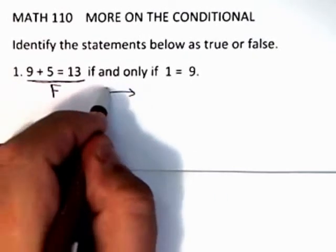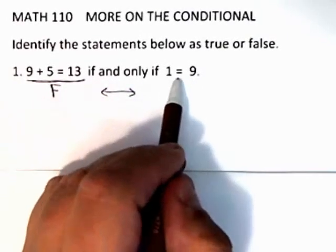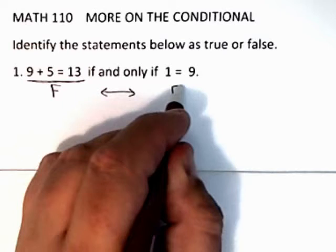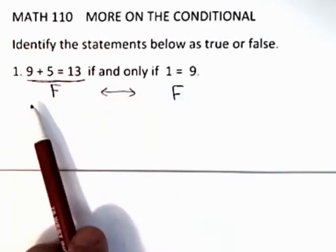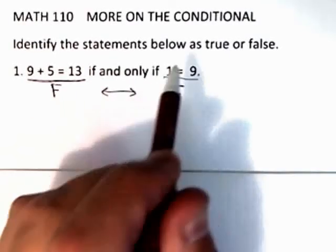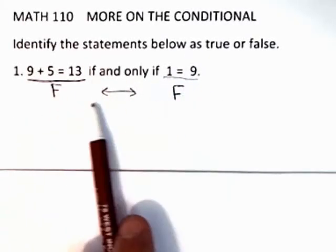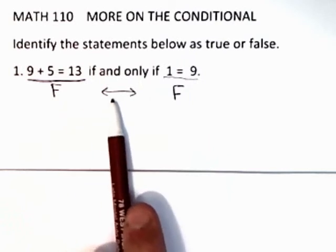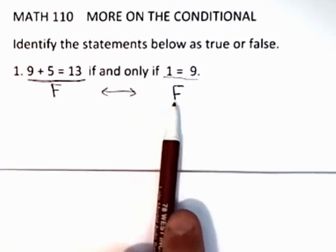And of course if and only if is this biconditional. And 1 is equal to 9 is also false. So what you've done is you've written this now as a standard biconditional: false if and only if false.